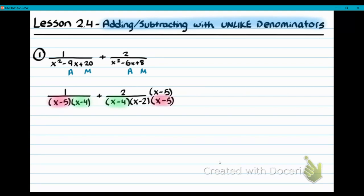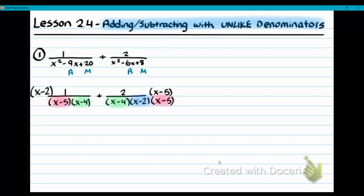We can color-coordinate it: they both have the X minus four factor and they both have the X minus five factor. Now in blue, we highlight the X minus two factor. The first fraction needs an X minus two, so I'm going to multiply in an X minus two to the numerator and denominator. Now they both match. Your LCD is X minus four, X minus five, and X minus two.